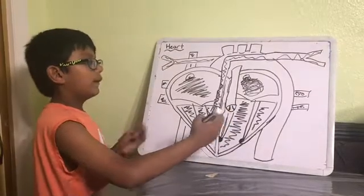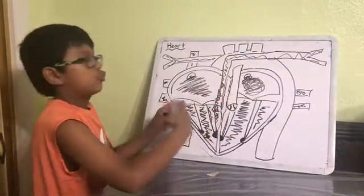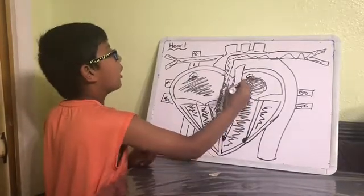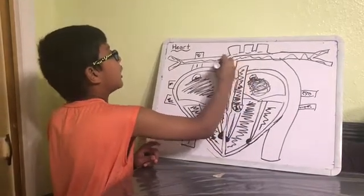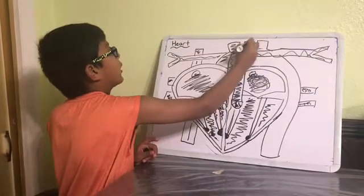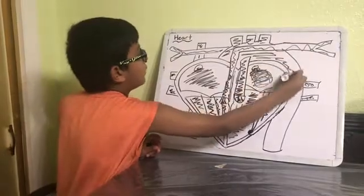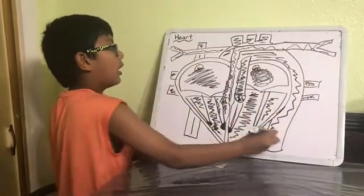then when the ventricles contract my blood or me, if I'm a red blood cell will go into the aorta and then out to the rest of the body. So this is the path that your blood takes when it's pumped.